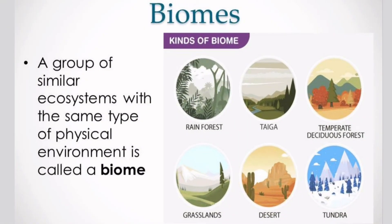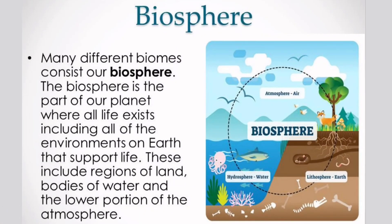A group of similar ecosystems with the same type of physical environment is called a biome. Many different biomes consist of the biosphere. The biosphere is the part of our planet where all life exists, including all the environments on the Earth that support life. These include regions of land, bodies of water, and the lower portion of the atmosphere.